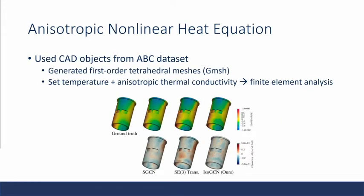And now diving into the second experiment, the anisotropic nonlinear heat equation. They grabbed CAD objects from the ABC dataset, and they generated first-order tetrahedral meshes using the GMSH software. They then set the temperature and anisotropic thermal conductivity, and they conducted finite element analysis to get the ground truth that you see on the left-hand side here. And the software they use is called Front ISTR, which will also be used as a benchmark.